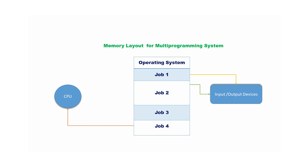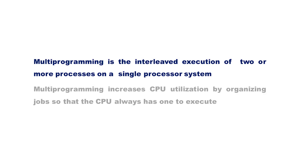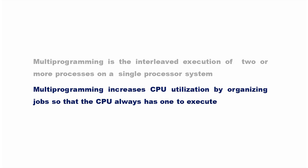Meanwhile, job 1 may finish its I/O operation and become ready to execute. When job 4 either finishes or waits for an I/O operation, job 4 is released from the CPU and job 1 is selected for execution again. This continues until the job finishes. Multiprogramming is the interleaved execution of two or more processes on a single processor system, and it increases CPU utilization by organizing jobs so that the CPU always has one to execute.